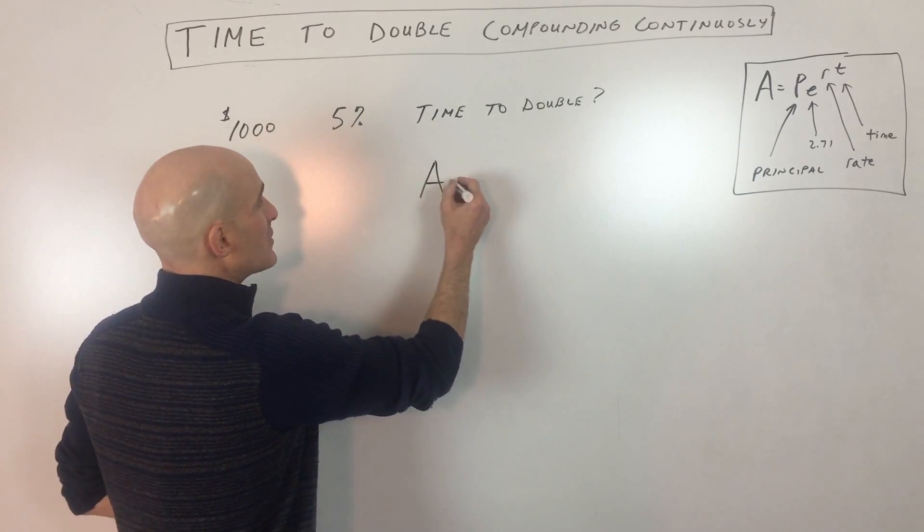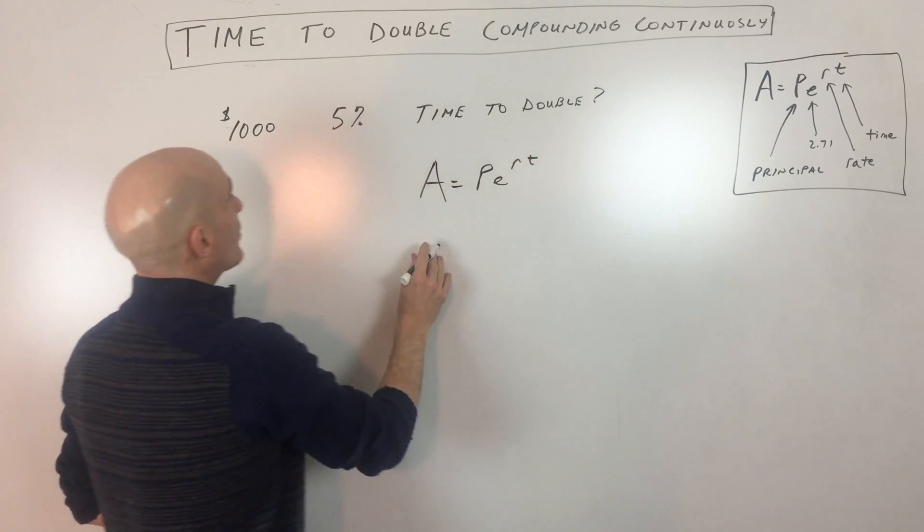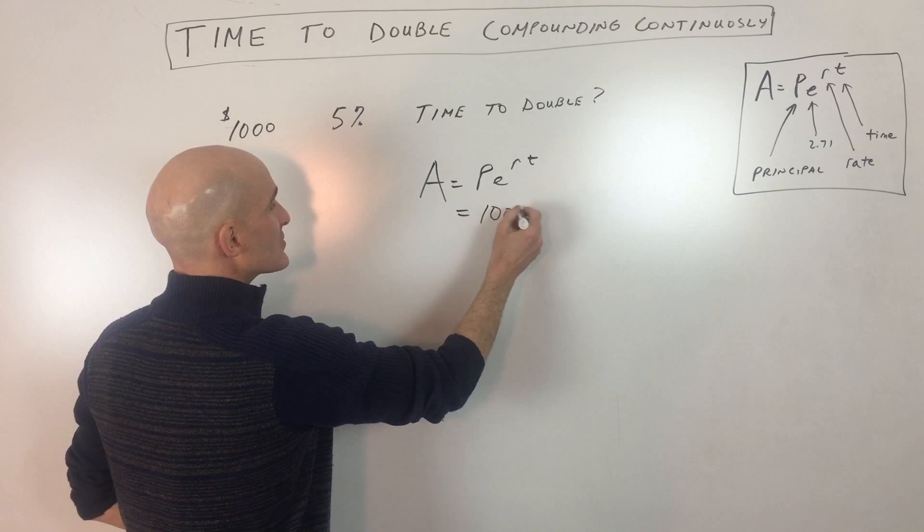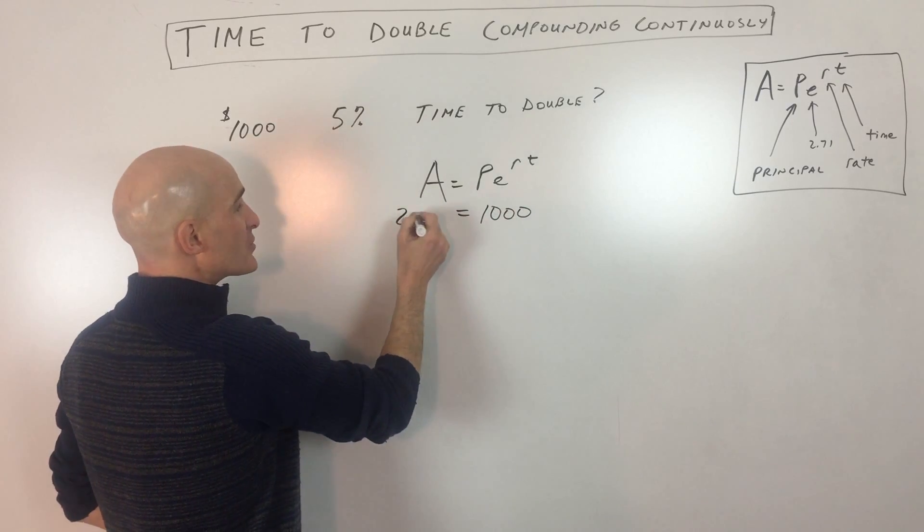We've got A equals PE to the RT power. And we're trying to find out, the principle is 1,000, right? We want to end up with 2,000.